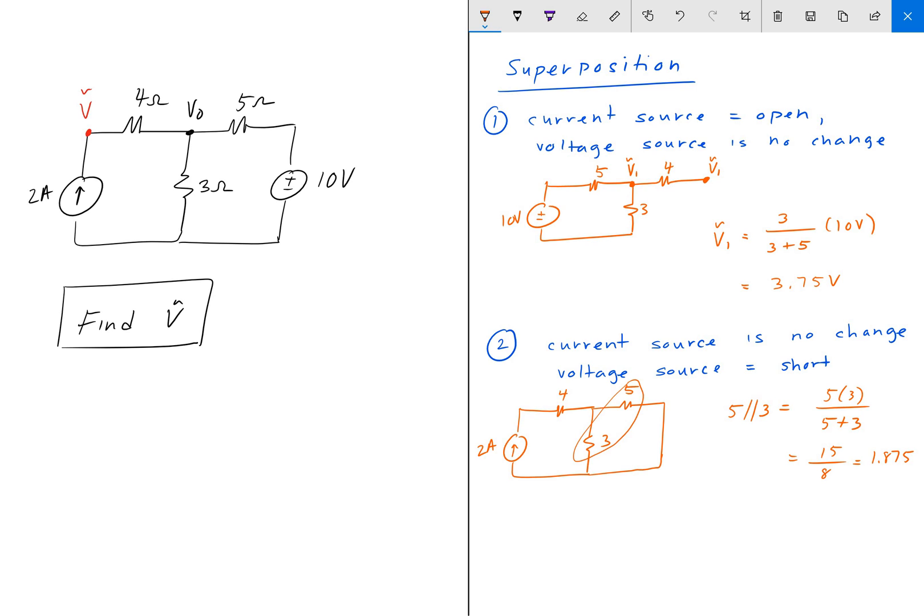So then we can rewrite this as 4, 1.875. And now the 4 and the 1.875 are in series. And remember, we're trying to find actually this V tilde, we're going to call it 2.